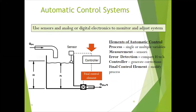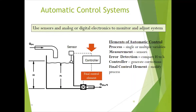First we saw the system without control, second we saw manual control — this third case is automatic control. We have the same problem but with added electronic devices: we have a sensor now instead of a glass pipe, a controller communicating with the sensor, and a final control element. The final control element takes the signal from the controller and is connected to the valve, controlling the valve position. Here we need to understand some definitions — the first one is process. Every control system will have a process; maintaining a water level is the process here.